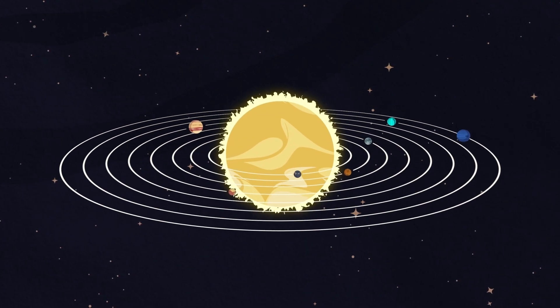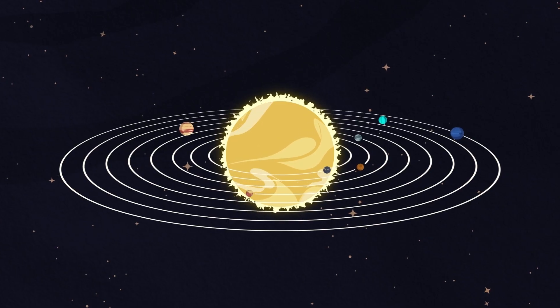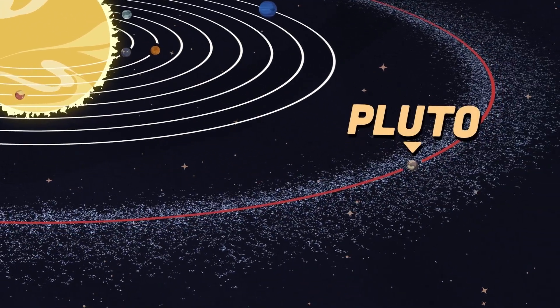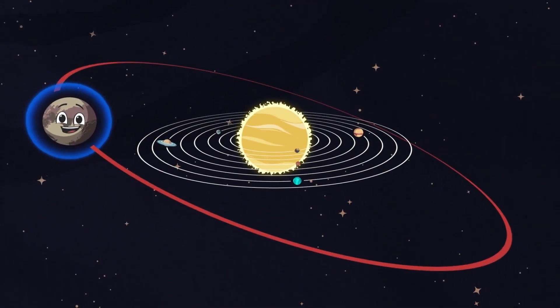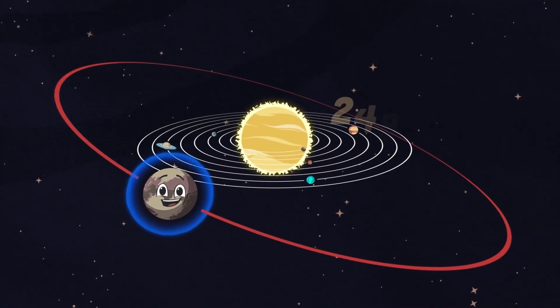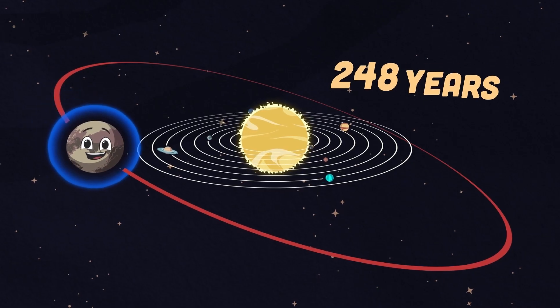If you travel past the planets from the burning sun, you can find me in the Kuiper Belt, in your solar system. I have an elongated orbit when I orbit the sun. Once every 248 years, there's more to come.